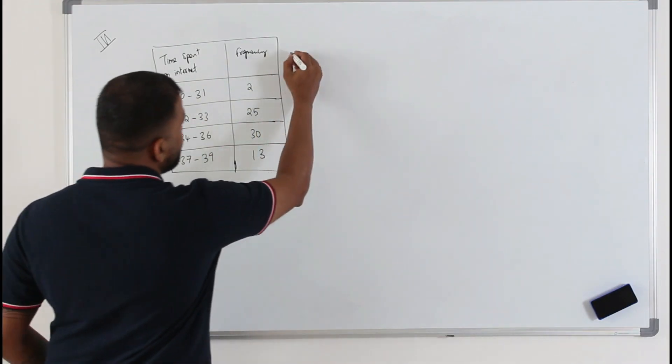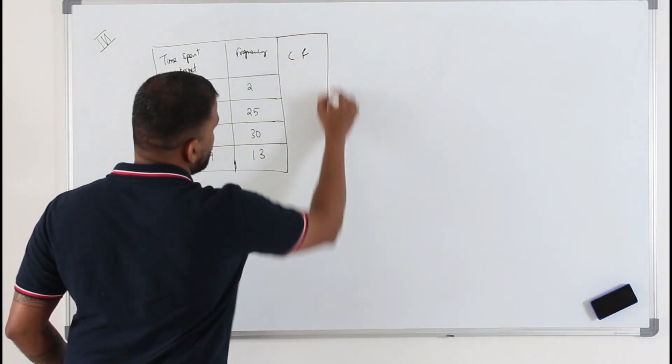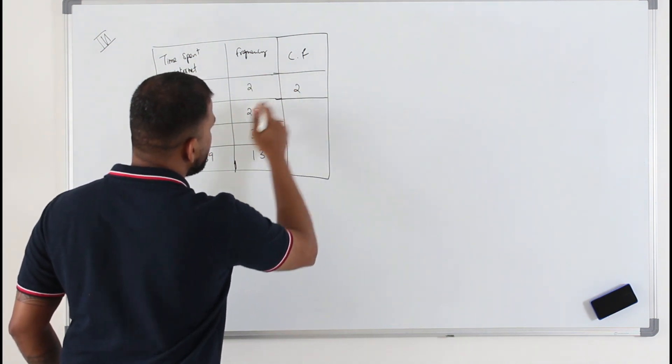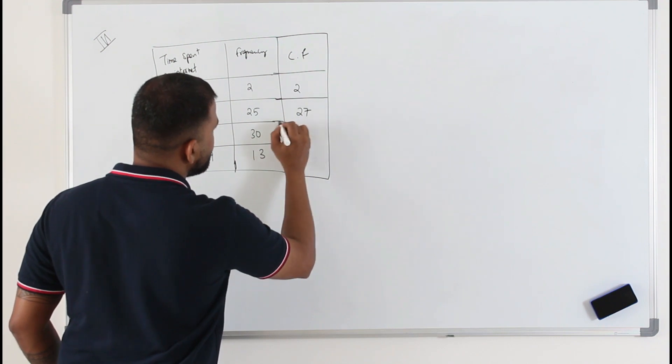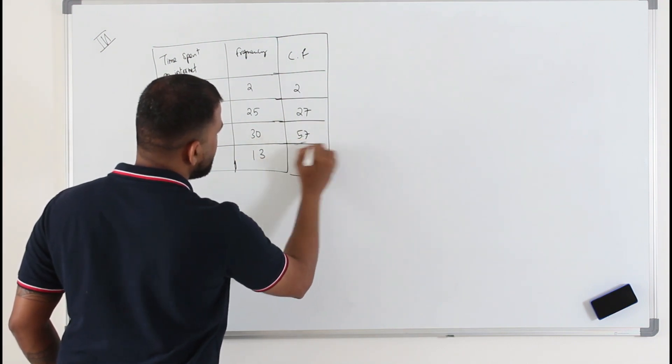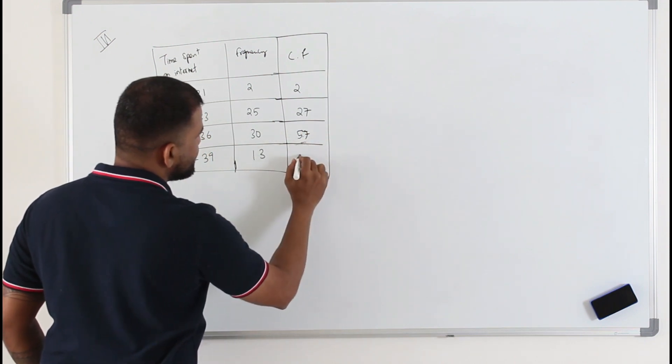First you need cumulative frequency. To find cumulative frequency write the first frequency as it is and keep on adding the next one: 27, 40, 57, 60, 70.